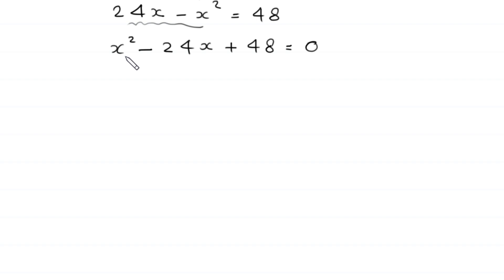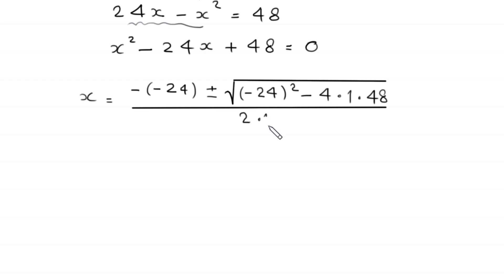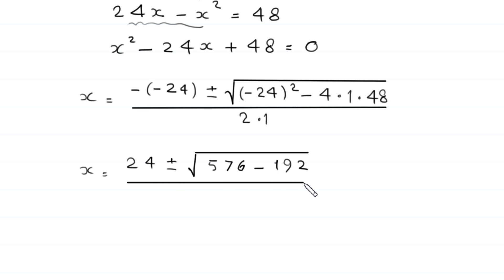This is a quadratic equation that is not factorable, so we solve it using the quadratic formula. With a equals 1, b equals negative 24, and c equals 48, x equals negative b, which is positive 24, plus or minus the square root of b squared minus 4ac, all divided by 2a. That gives us 24 plus or minus the square root of negative 24 squared minus 4 times 1 times 48, divided by 2.